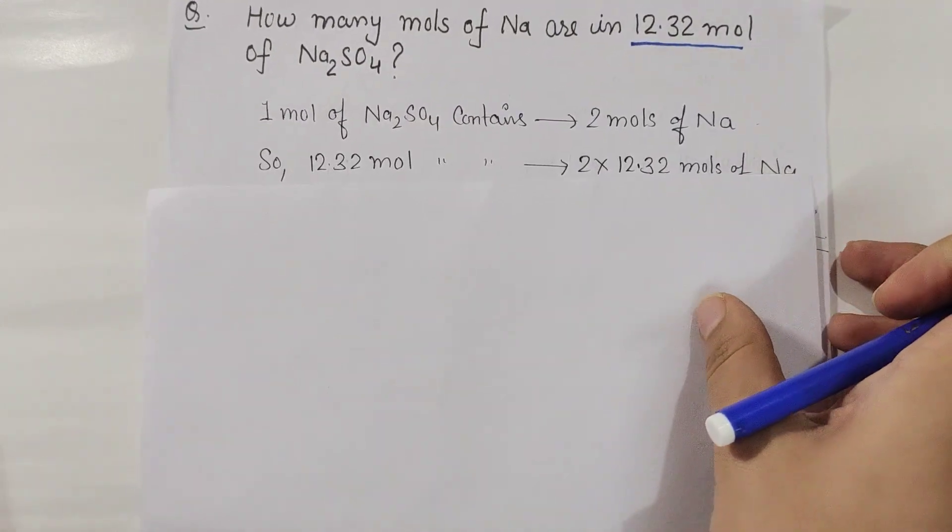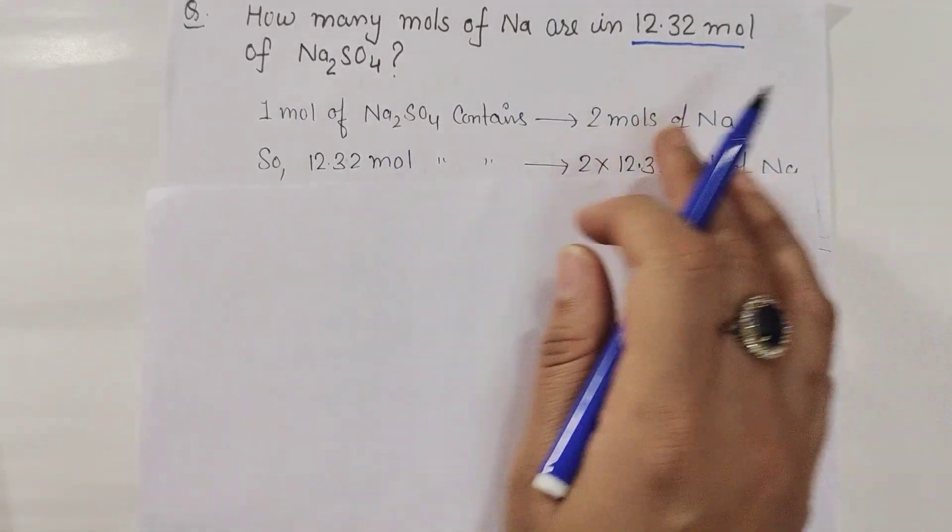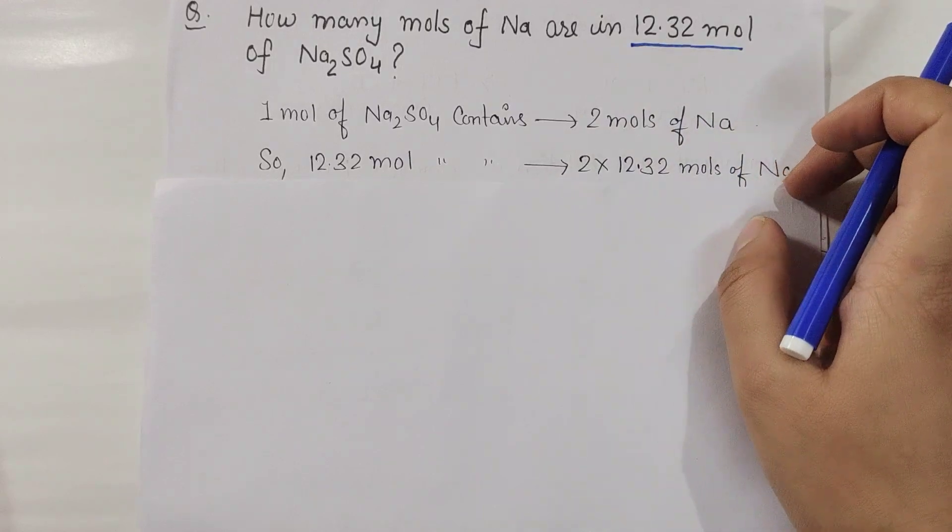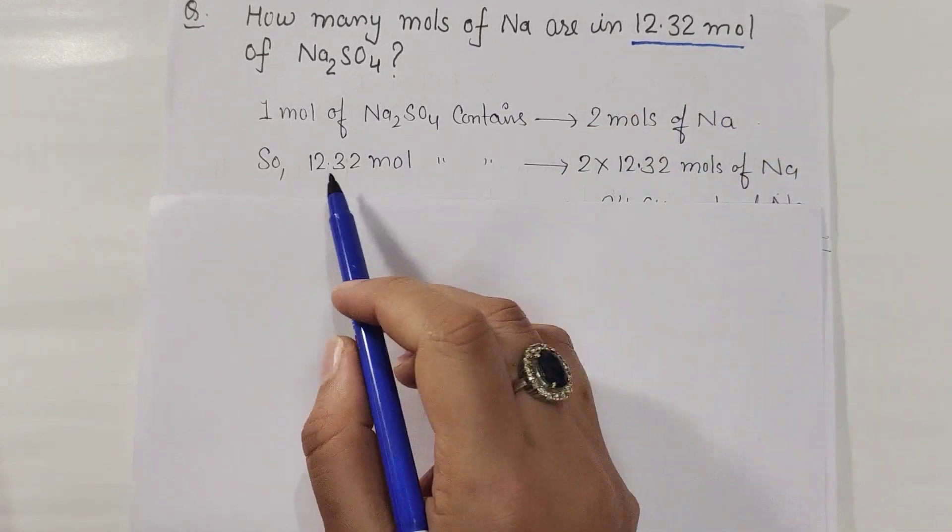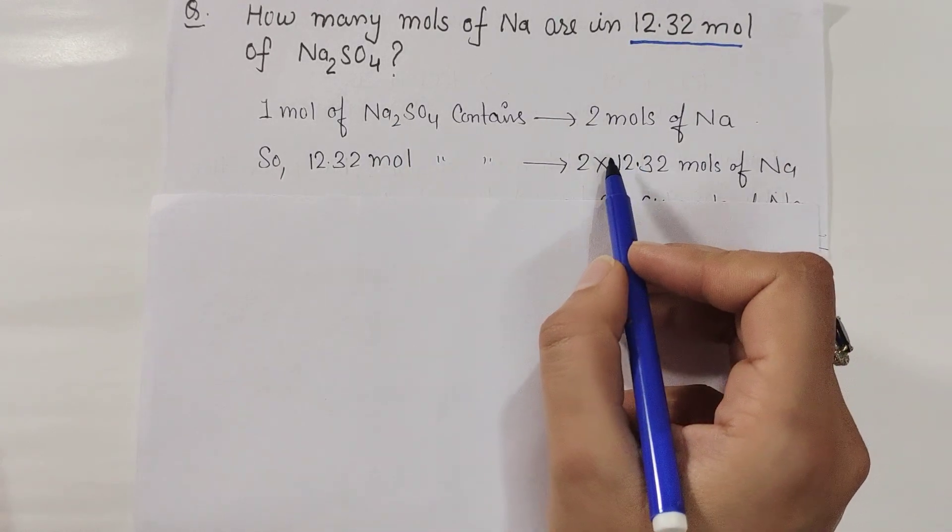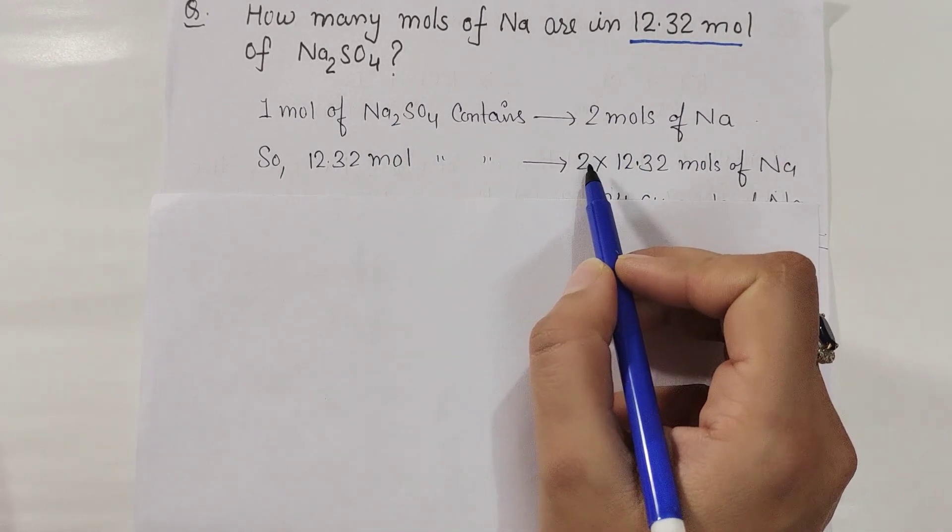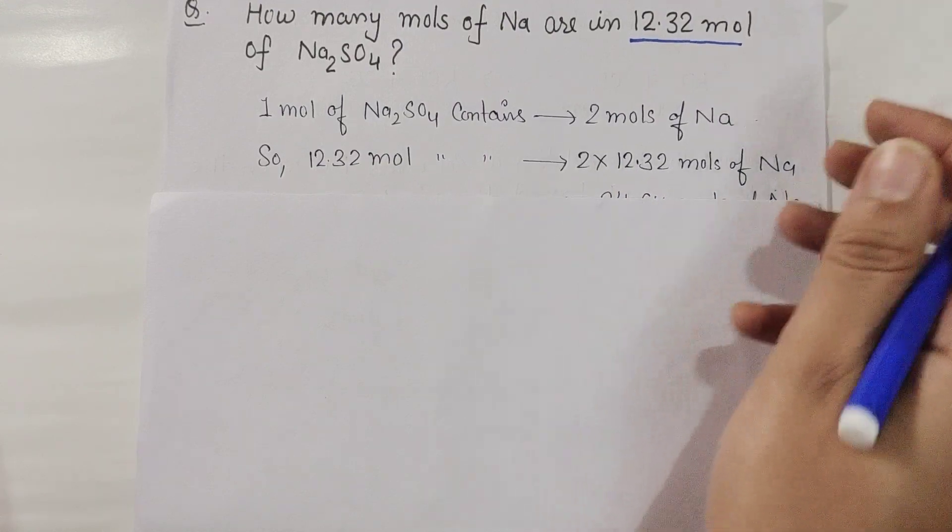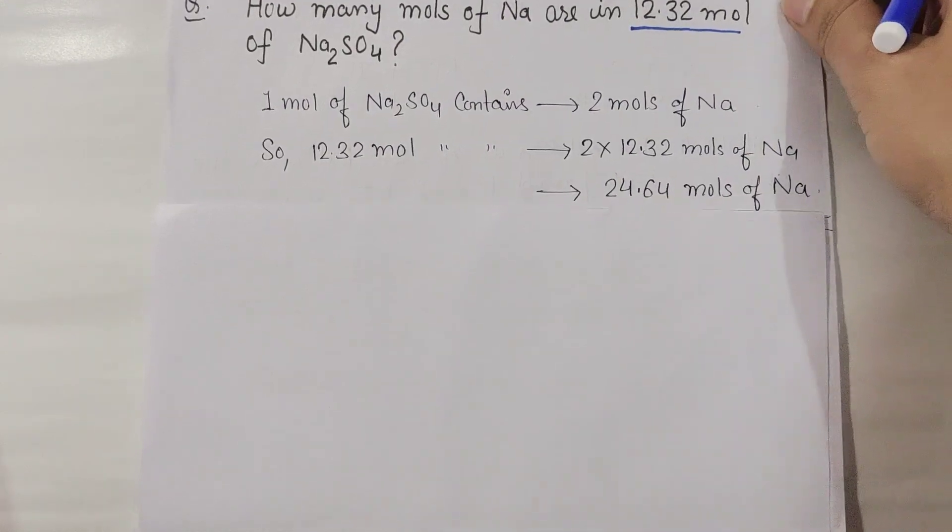Now, given that you have 12.32 mole of Na2SO4, it contains 2 into 12.32 mole of Na. So how many moles of Na have? 24.64 moles of Na.